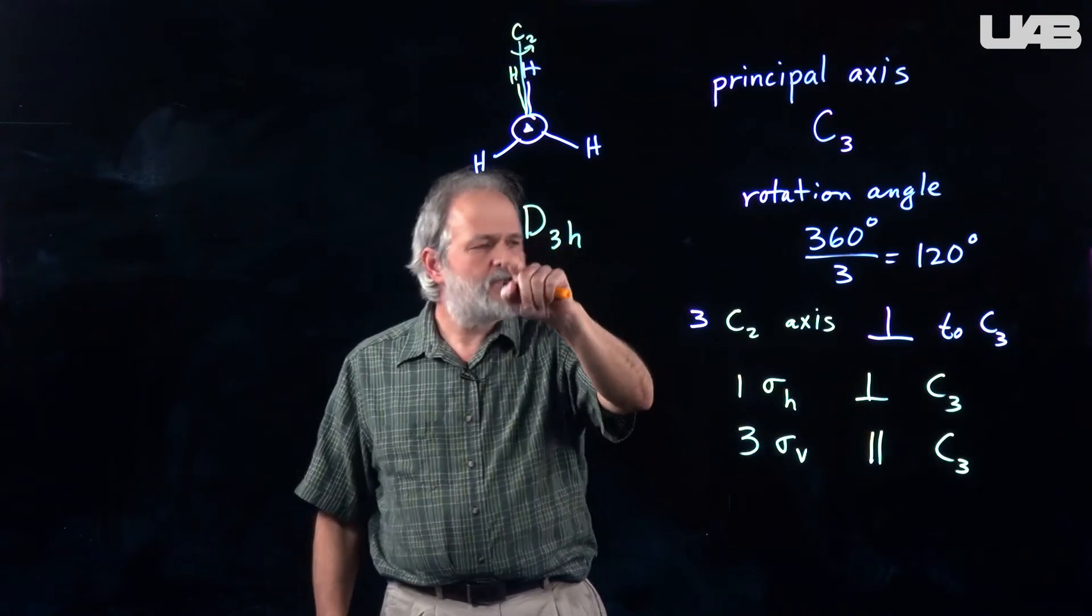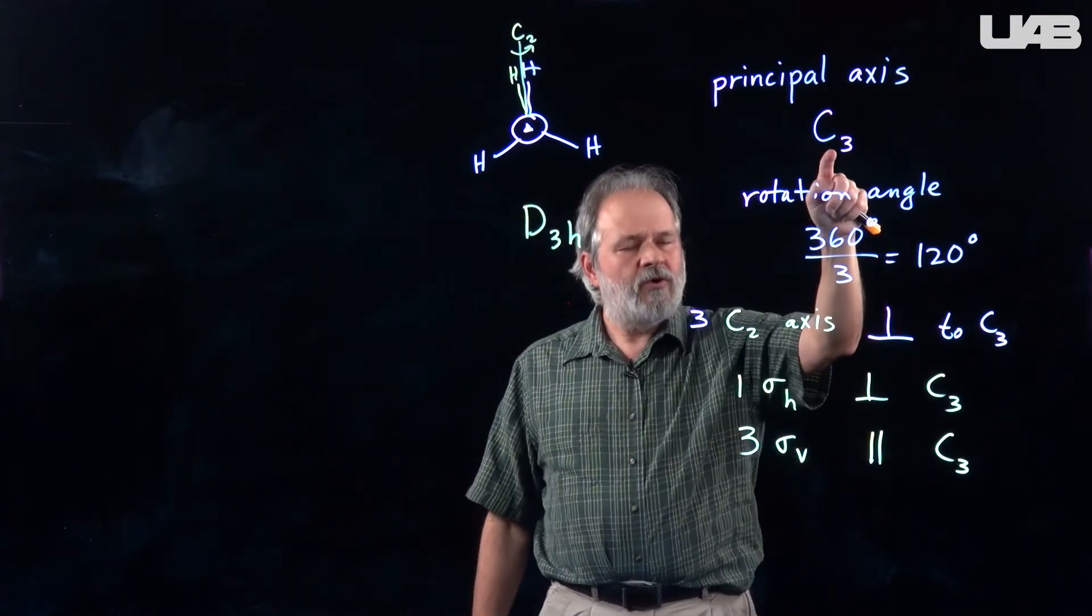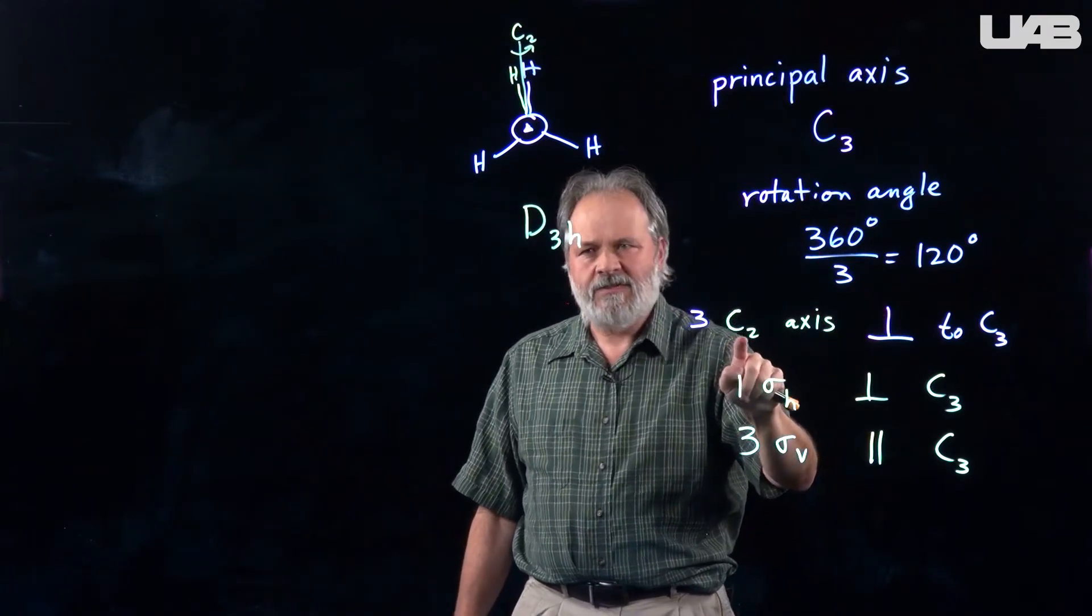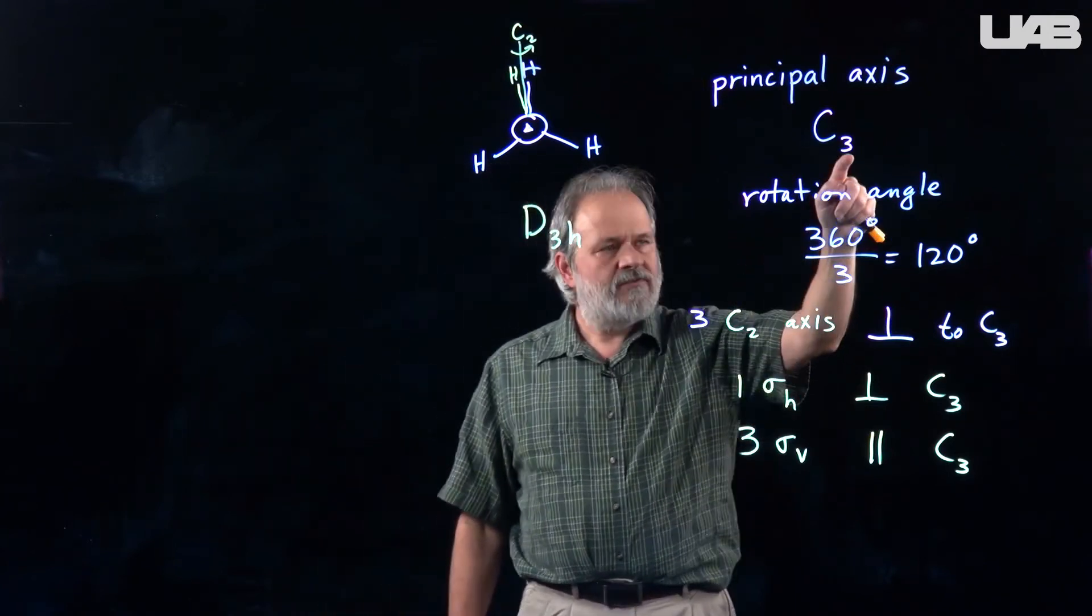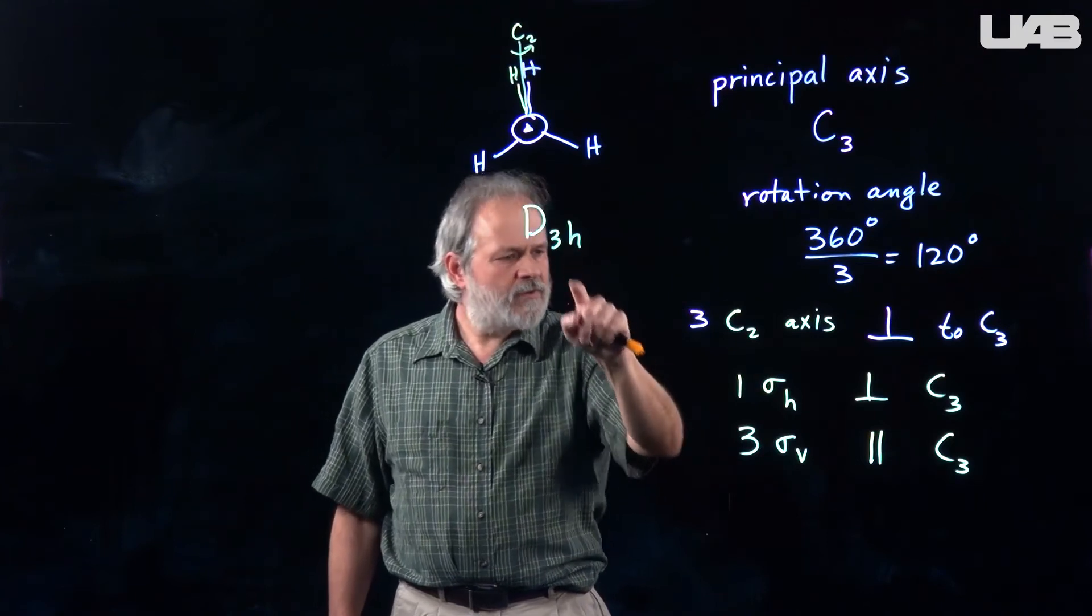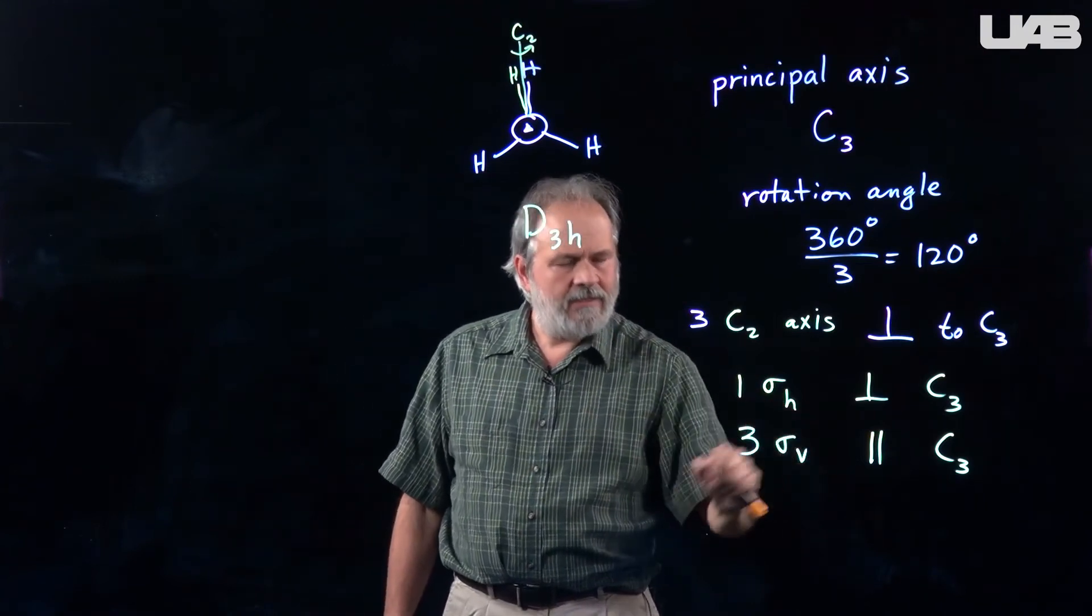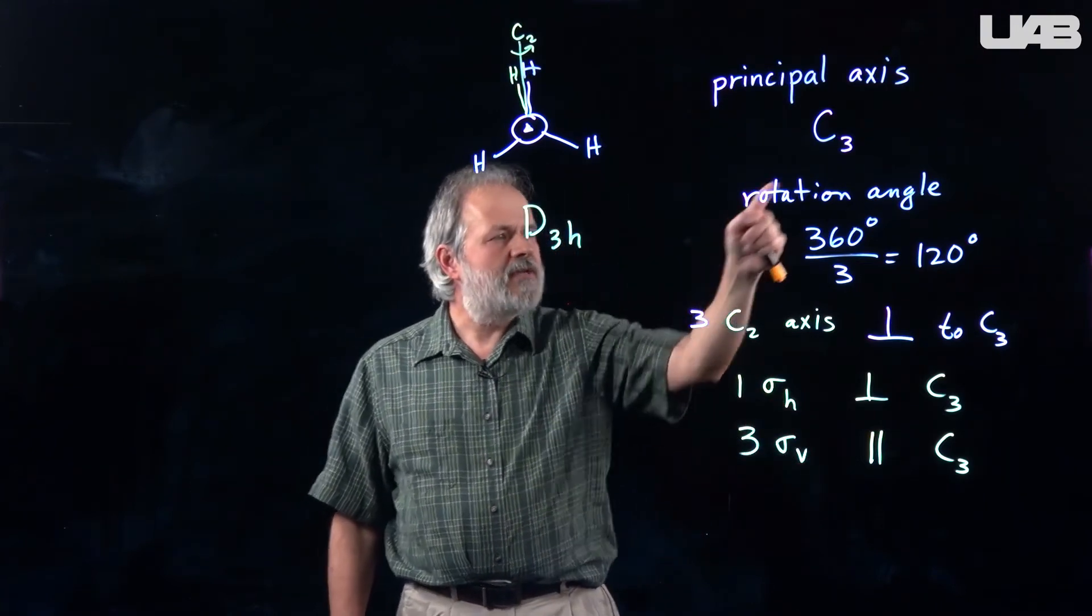So the D refers to the fact that you have a principal axis and then some perpendicular C2s. The three stands for the principal axis order. And the H refers to the fact that you have a horizontal plane that's perpendicular to the C3 axis.